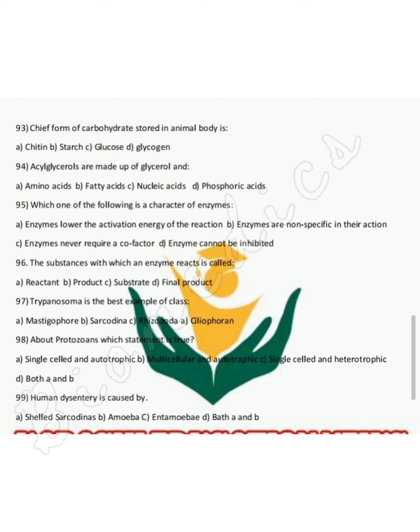The chief form of carbohydrates stored in the animal body is glycogen. Fats are made up of glycerol and fatty acids, and are called triacylglycerides.